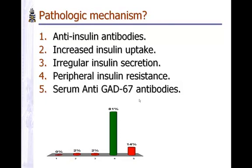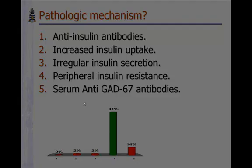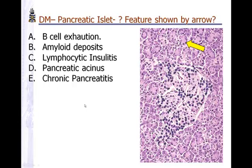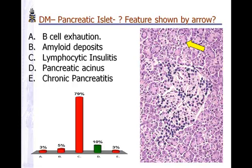Serum anti-GAD 65 antibodies are typically seen in Type 1. What feature is shown in this image? These are the pancreatic acini — the exocrine pancreas part — and this area is the endocrine part, the islets. It is showing some lymphocytes, typically seen in Type 1. So this is the pancreatic acinus, each one individually.